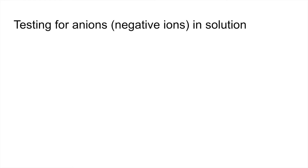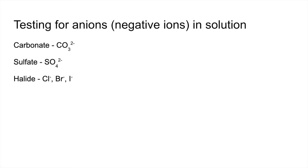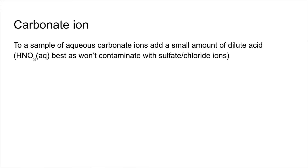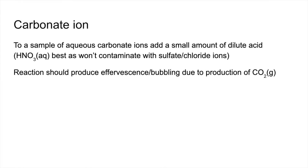Moving on to the anions — the negative ions. We'll look at carbonate, sulfate, and the halides: chloride, bromide, and iodide. For carbonate, add a small amount of dilute acid to your sample. Nitric acid is best as it won't contaminate with sulfate or chloride ions, which could interfere with further tests. The reaction produces effervescence due to CO2 gas.